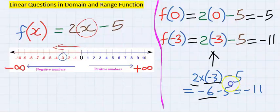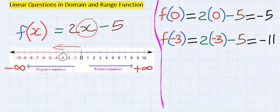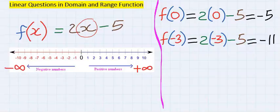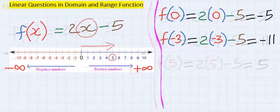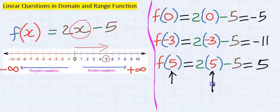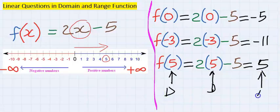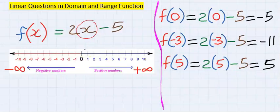Two times minus three gives minus six, and minus six minus five gives minus eleven. For x equals zero: two times zero is zero, and zero minus five is minus five. Now moving towards positive infinity, let's try x equals five. Two times five is ten, and ten minus five gives five. So the domain of five gives a range of five.